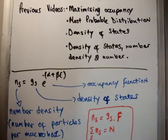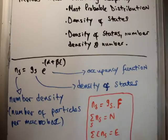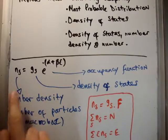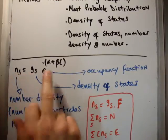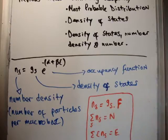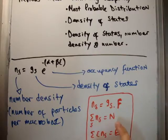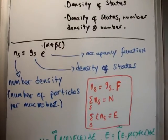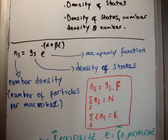So if n_s is the number density, we can rewrite this: n_s equals g_s times e to the minus alpha plus beta epsilon as n_s equals g_s times f. That's generally the way we write it. Now, we know that the sum of the number density, or the sum of all those particles, is the total number of particles. And if you multiply that by the energy of each particle, we get the total energy.